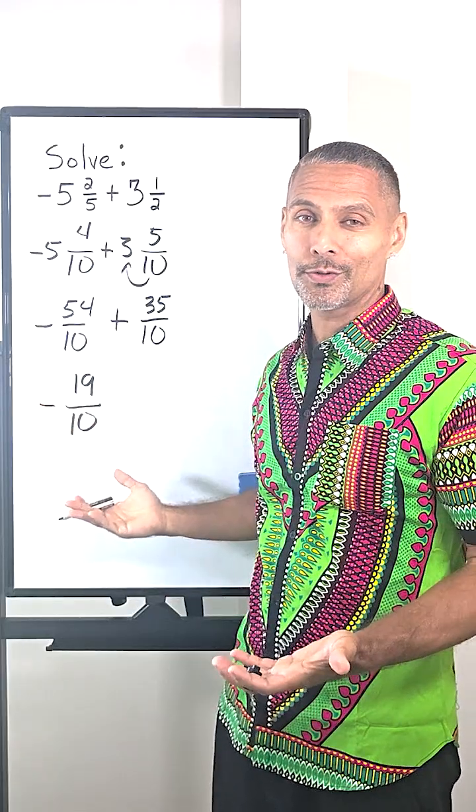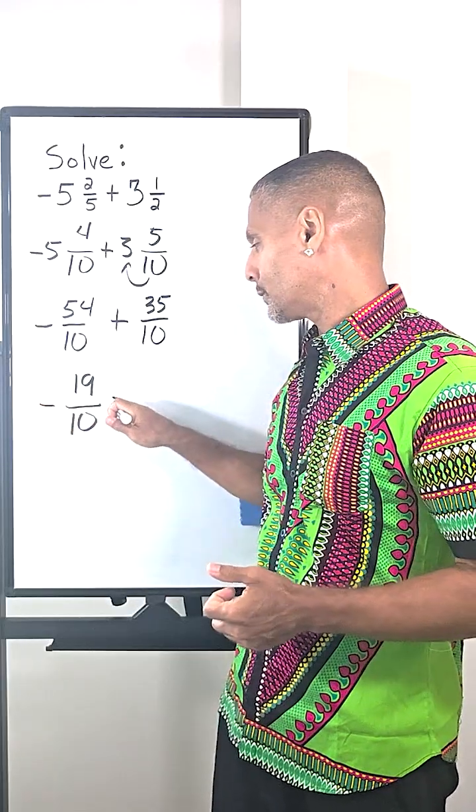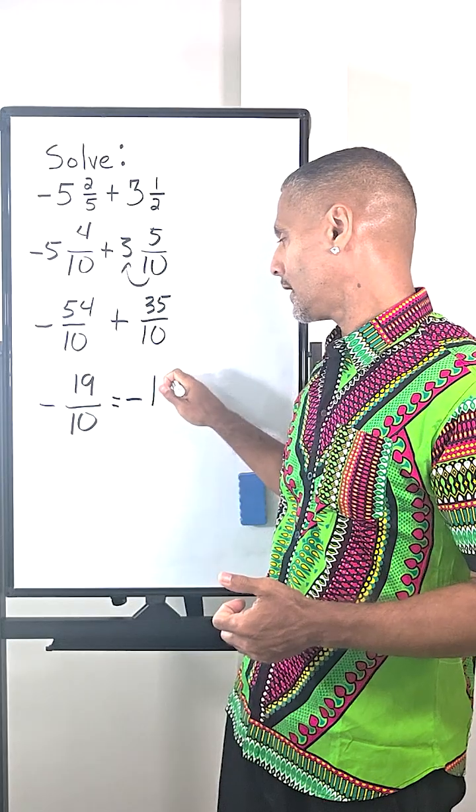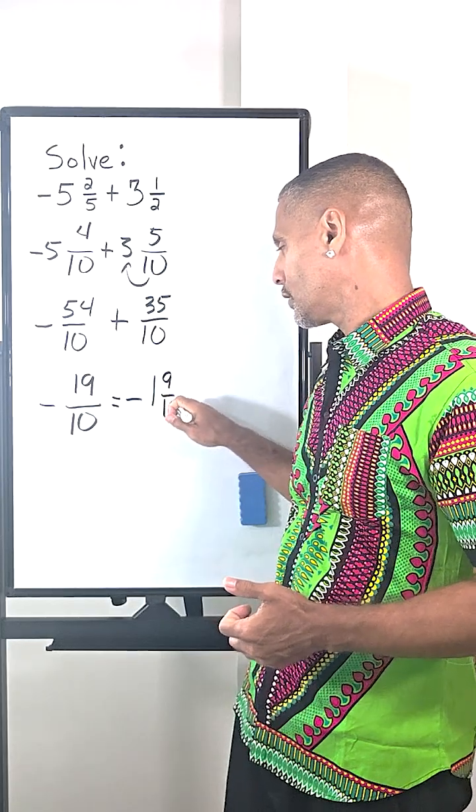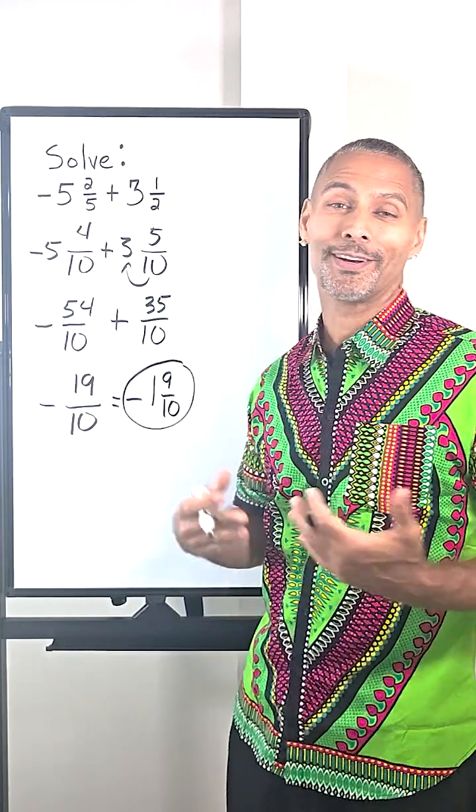Now we can convert this into a mixed number, and that would be equal to negative one and nine tenths, which is our final solution.